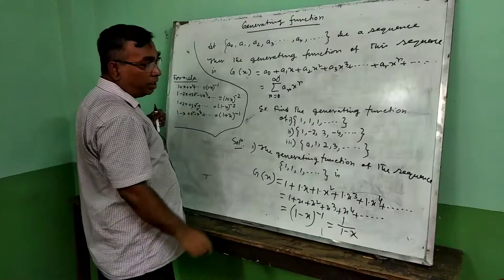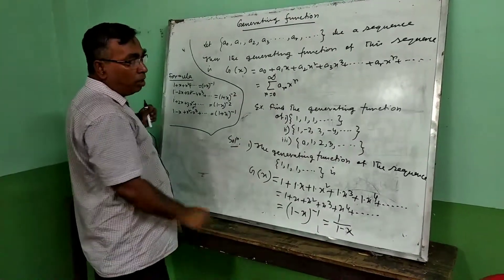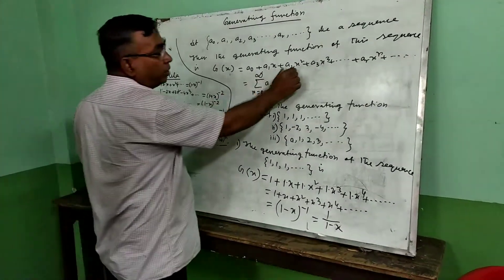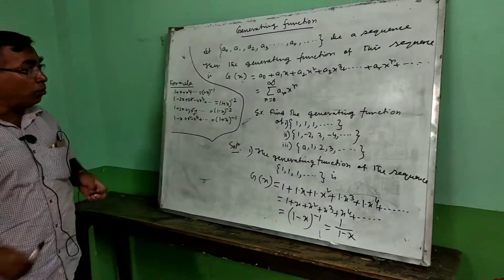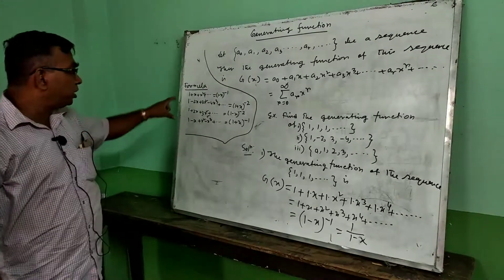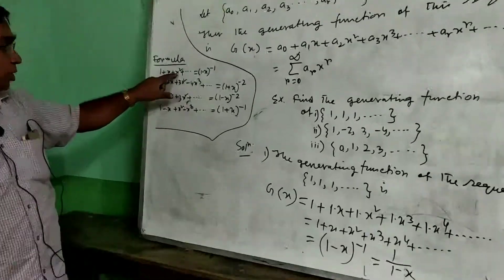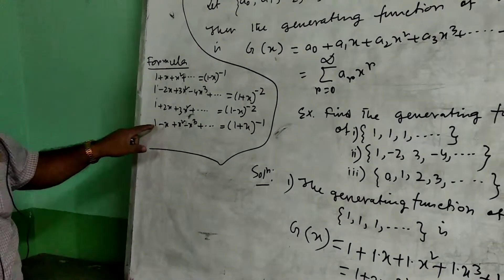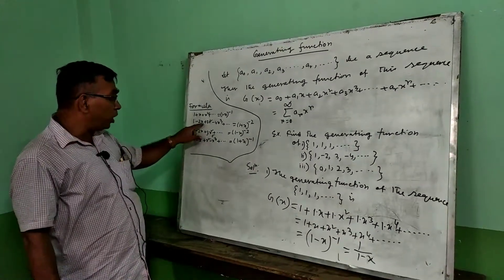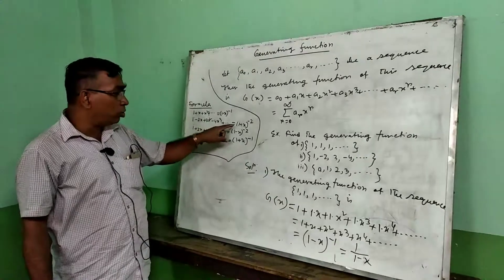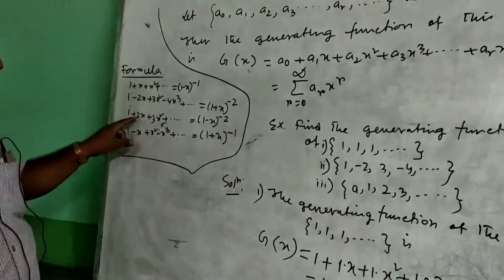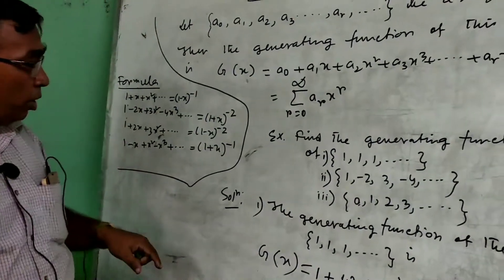If we put r equal to 1, that gives the second term a1*x, and by this way you get the third, fourth, and fifth terms. To find the generating function of a sequence, we need these key formulas: 1 + x + x² + ... = (1-x)^(-1); 1 - x + x² - x³ + ... = (1+x)^(-1); 1 - 2x + 3x² - 4x³ + ... = (1+x)^(-2); 1 + 2x + 3x² + ... = (1-x)^(-2).